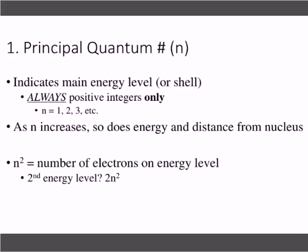Our first quantum number is called the principal quantum number. Its symbol is lowercase n. Make sure you know that — each of the four numbers has its own symbol. Whether it's capitalized or lowercase matters, it makes a difference.